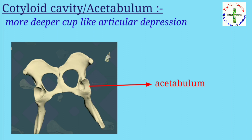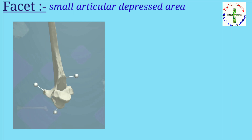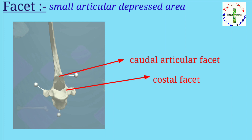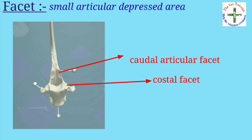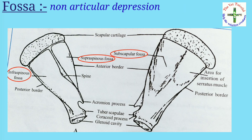Then cotyloid cavity or acetabulum — it is a deeper cup-like articular depression. Example: found in coccyx. Then facet — it is a small articular depressed area. Example: found on the side of the body of the thoracic vertebra for the attachment of the head of the ribs. Then fovea — it is a shallow articular depression. Example: found in the neural rings of the atlas, also known as fovea dentis.